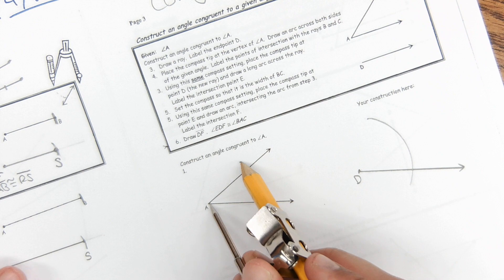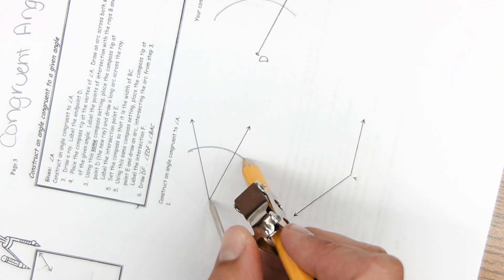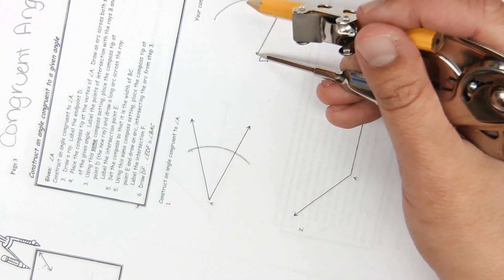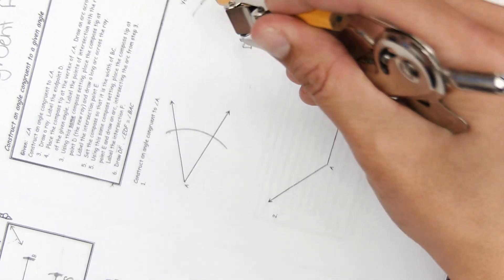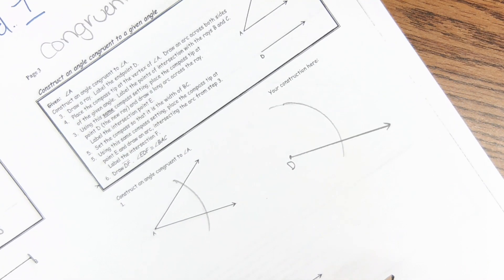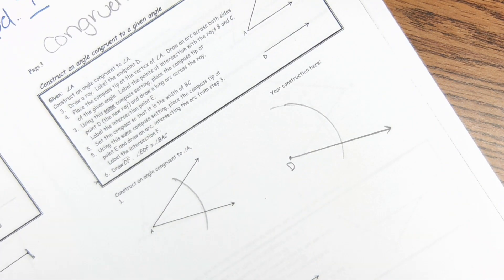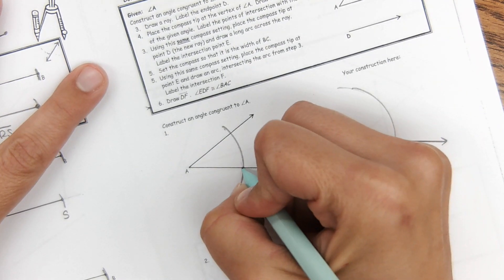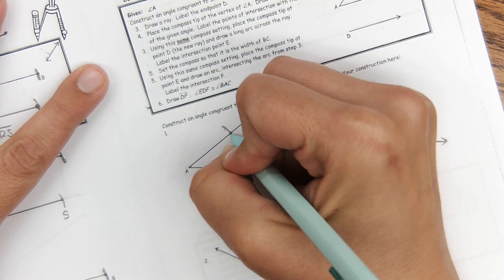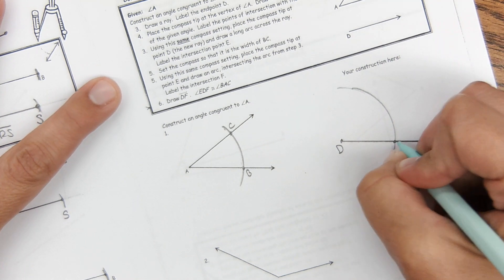Wait, how did you do it? So from A I just made an arc that crossed both rays, and then using the same measurement I went to D and did the same thing. And then this is point B and C, and this is E.